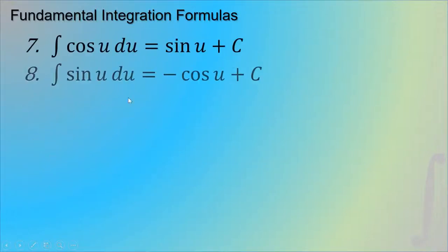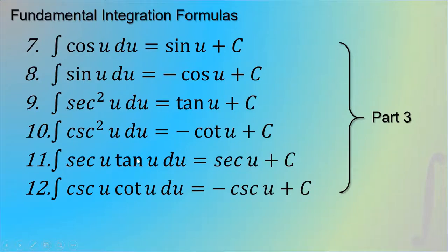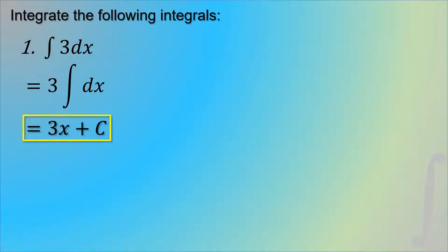The second and third parts — including trigonometric integration formulas — will be discussed in the next video. For our first example, we integrate ∫3dx. We move the constant 3 outside the integral sign, giving 3 times the integral of dx, which equals 3x plus c. We must not forget plus c — that is the constant of integration.